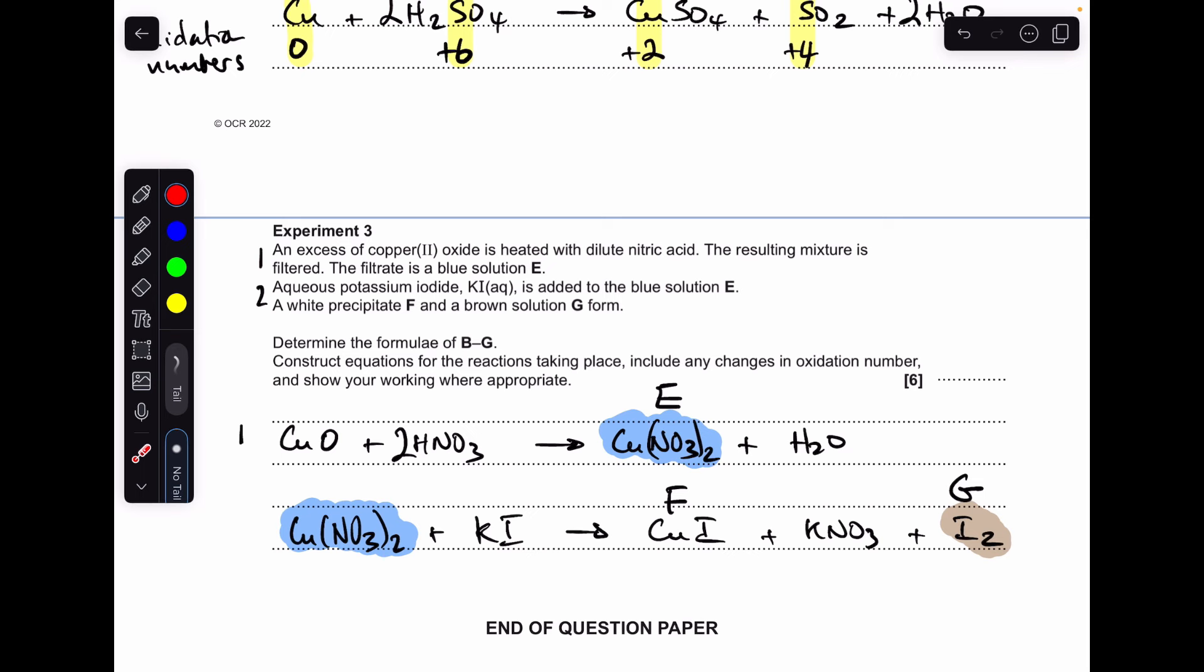And moving on to the second part, aqueous potassium iodide is added to the blue solution E, and we get a white precipitate, which is F, so that's going to be copper(I) iodide. Copper(I) compounds don't have any colour, because we've got that 3d¹⁰ electron configuration. And the brown solution G is going to be iodine. So to make the equation work, we need some potassium nitrate in there as well.